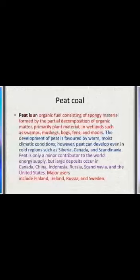First, peat coal. Peat is an organic fuel consisting of spongy material formed by the partial decomposition of organic matter, primarily plant material, in wetlands such as swamps, muskeg, bogs, fens, and moors. The development of peat is favoured by warm, moist climatic conditions. However, peat can develop even in cold regions such as Siberia, Canada, and Scandinavia. Peat is only a minor contributor to the world energy supply, but large deposits occur in Canada, China, Indonesia, Russia, etc.